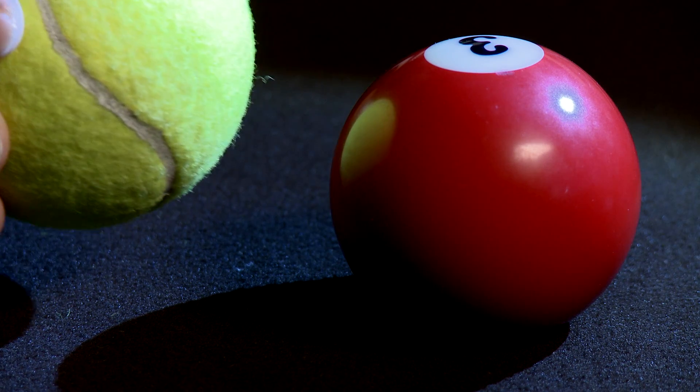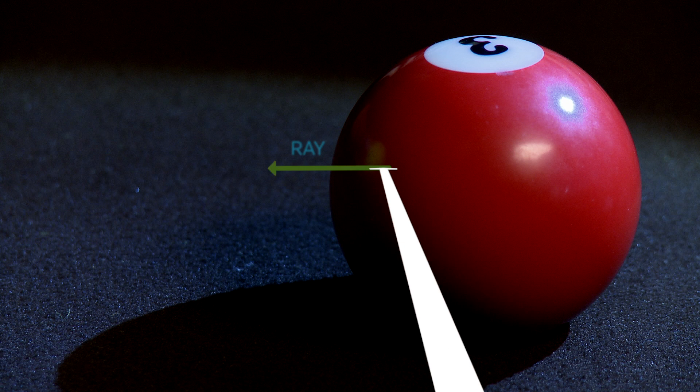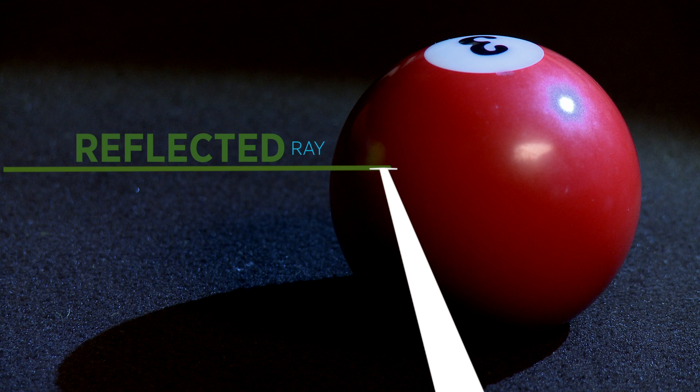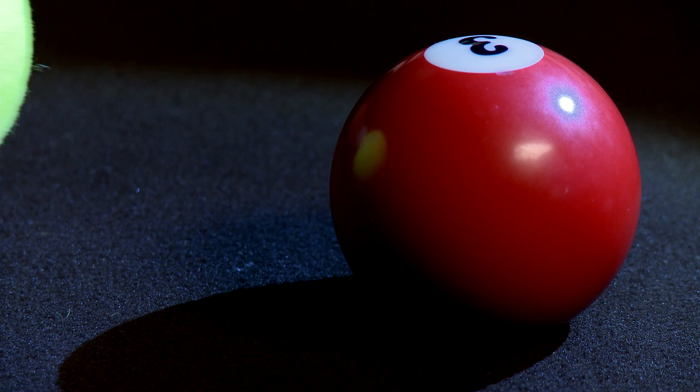As another example of indirect illumination, you can see a reflection of the tennis ball in the pool ball. A ray tracer can account for such reflections by sending another ray in the reflection direction. The direction of this reflected ray is determined by how a light ray would bounce naturally, in the same way a pool ball bounces.